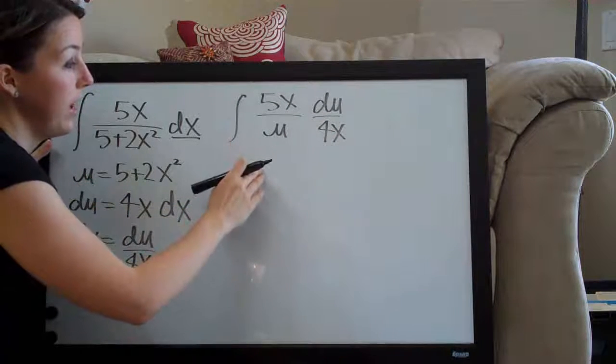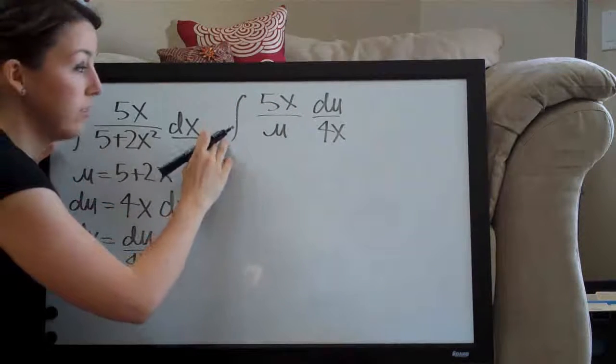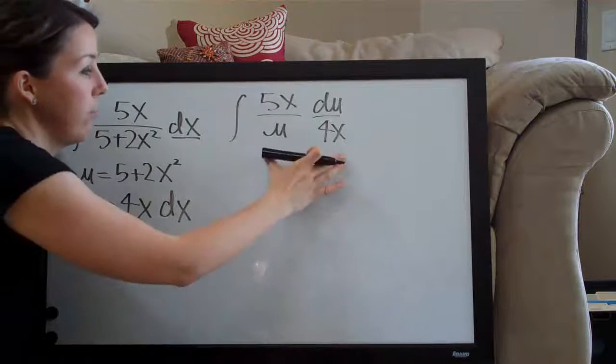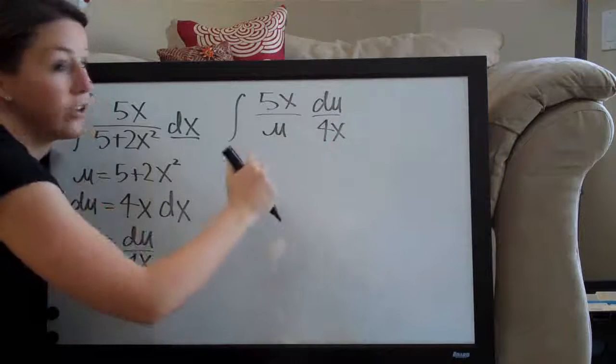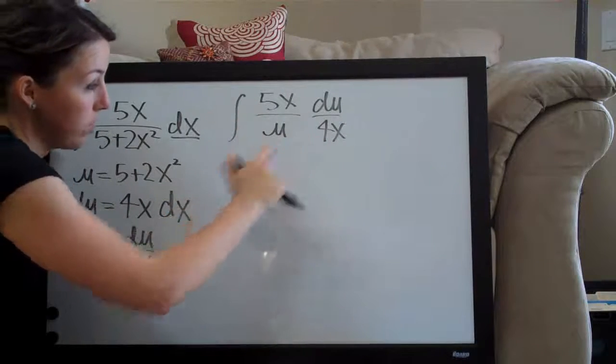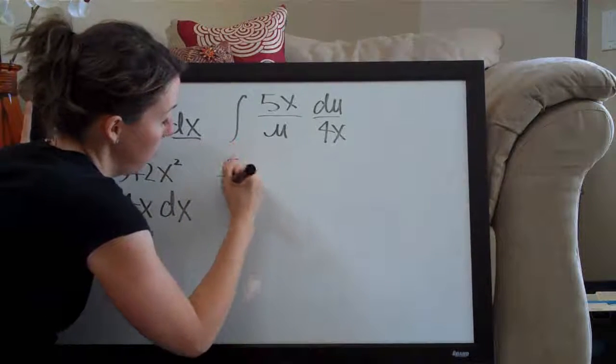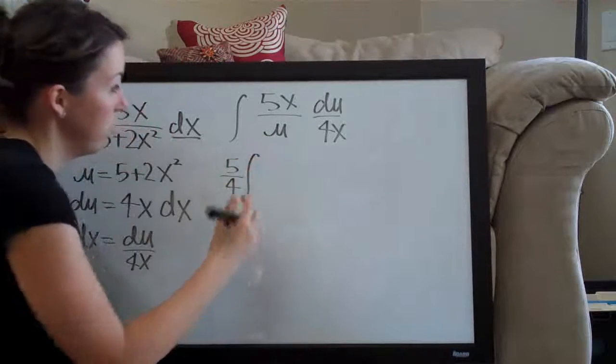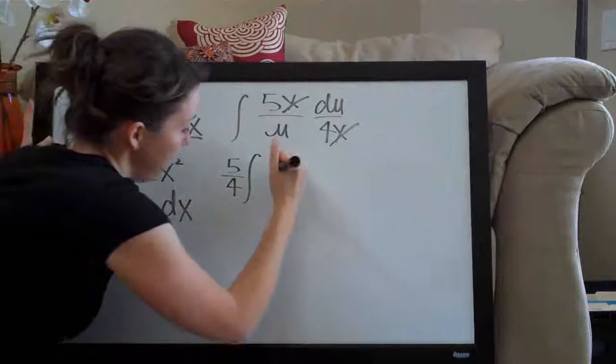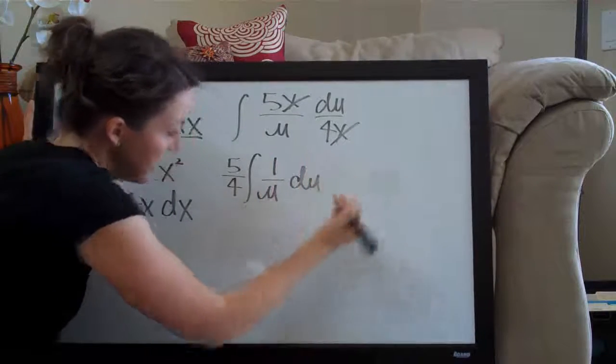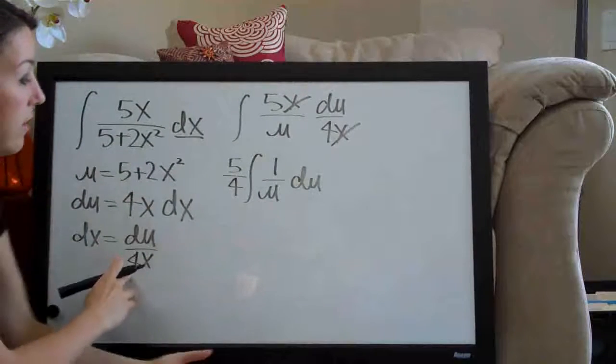We can also take the 5 fourths out in front of the integral to simplify. Whenever you have one term, everything here is multiplied together, and you have a coefficient on that term, 5 fourths here, you can pull that out in front. We pull the 5 fourths out in front and then we have the integral, the x's here cancel, they go away, and we end up with 1 over u du, which is perfect because this is now something that we can easily take the integral of.